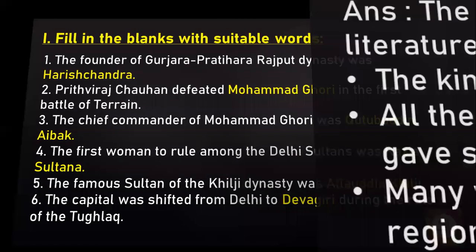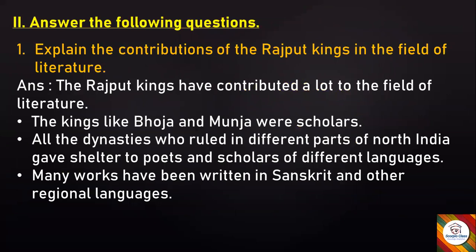Now let's move to the next section: Answer the Following Questions. First question: Explain the contributions of the Rajput kings in the field of literature. Answer: The Rajput kings have contributed a lot to the field of literature. Kings like Bhoja and Munja were scholars. All the dynasties that ruled in different parts of north India gave shelter to poets and scholars of different languages. Many works have been written in Sanskrit and other regional languages.